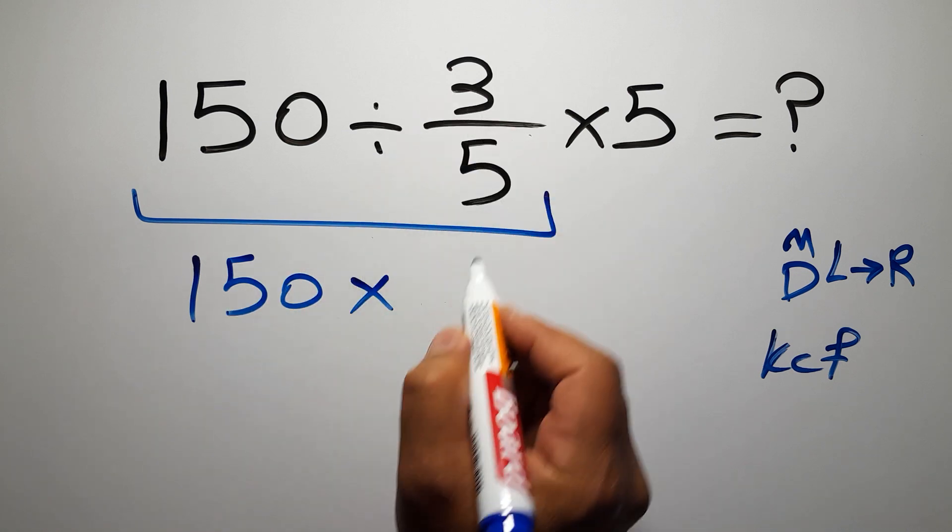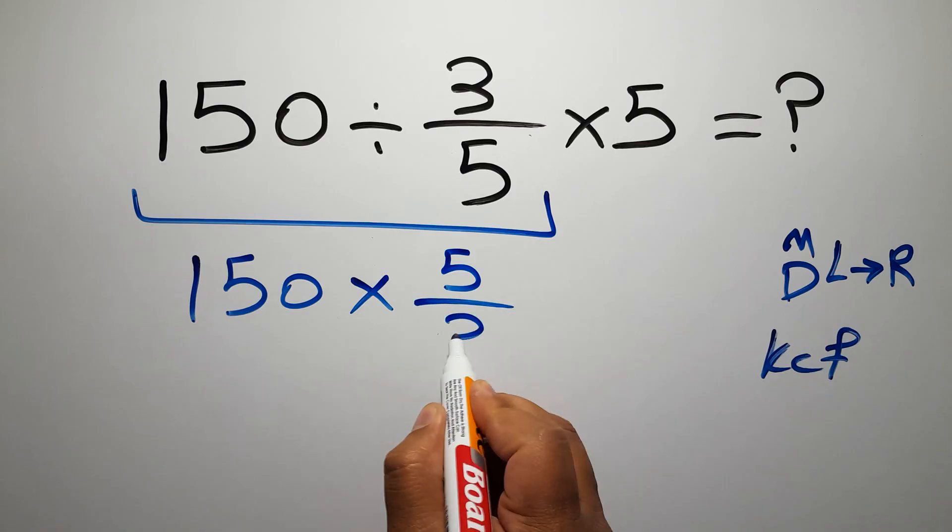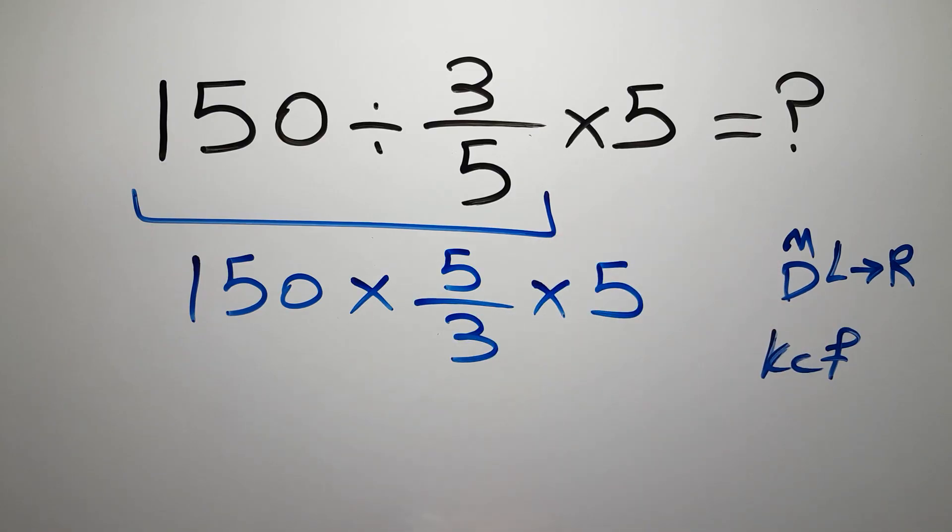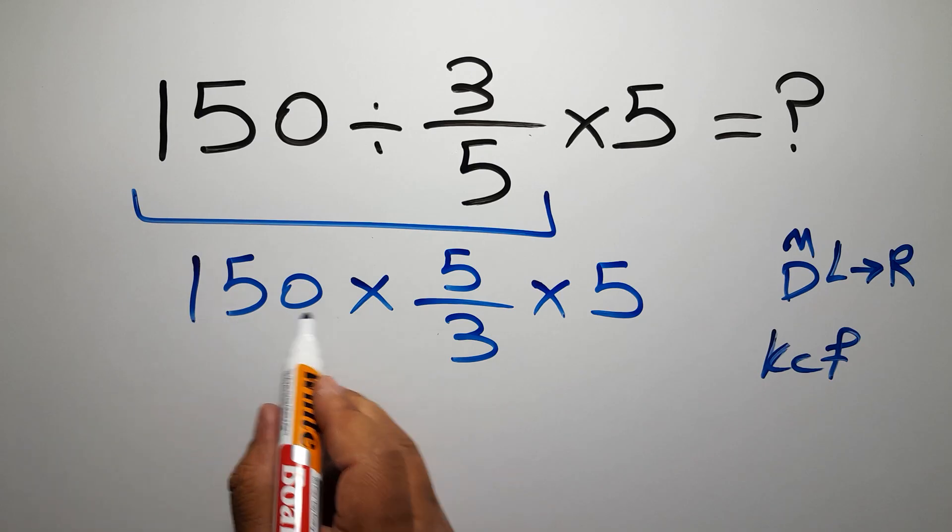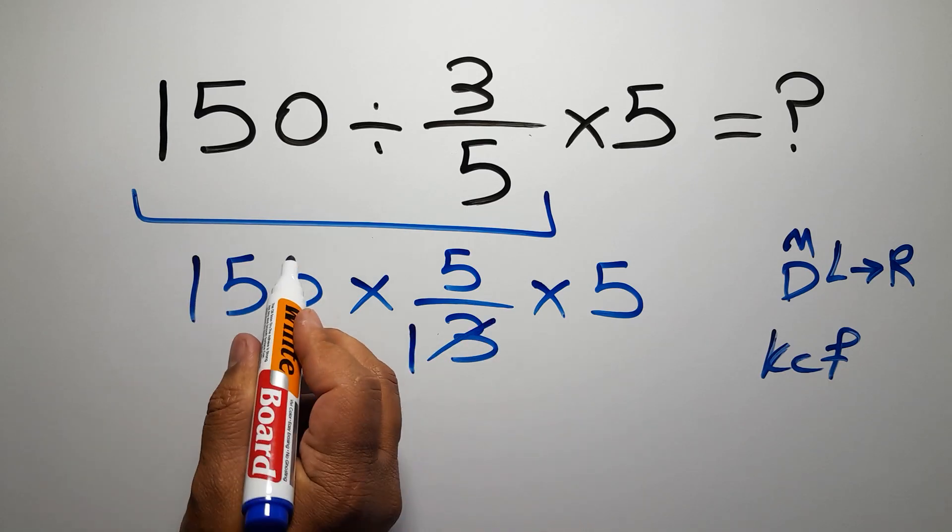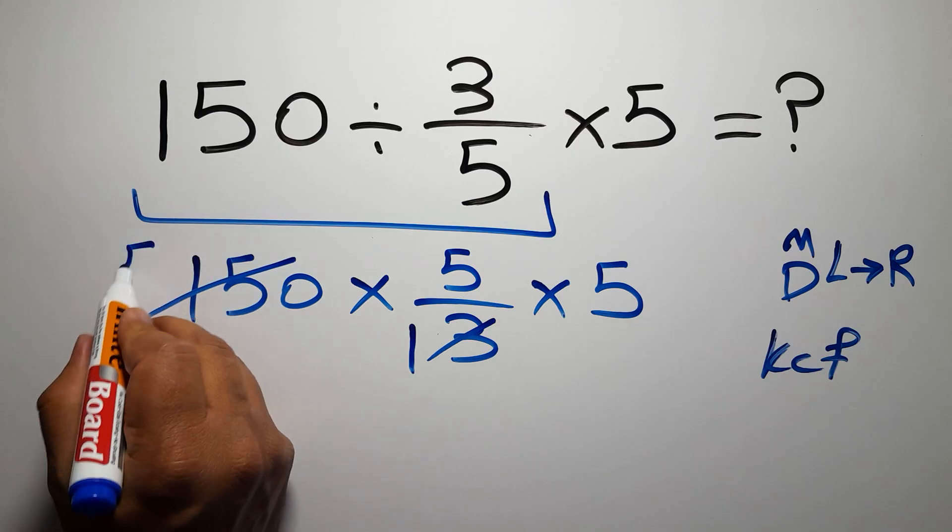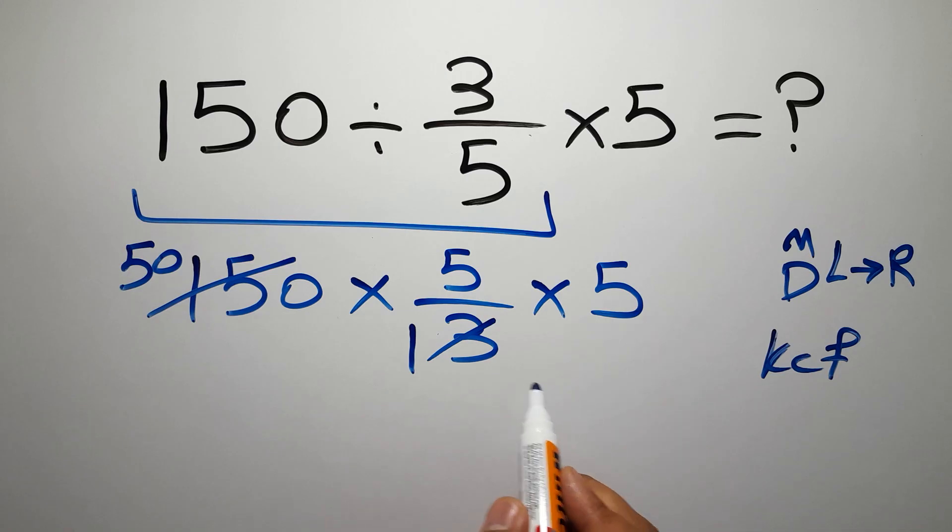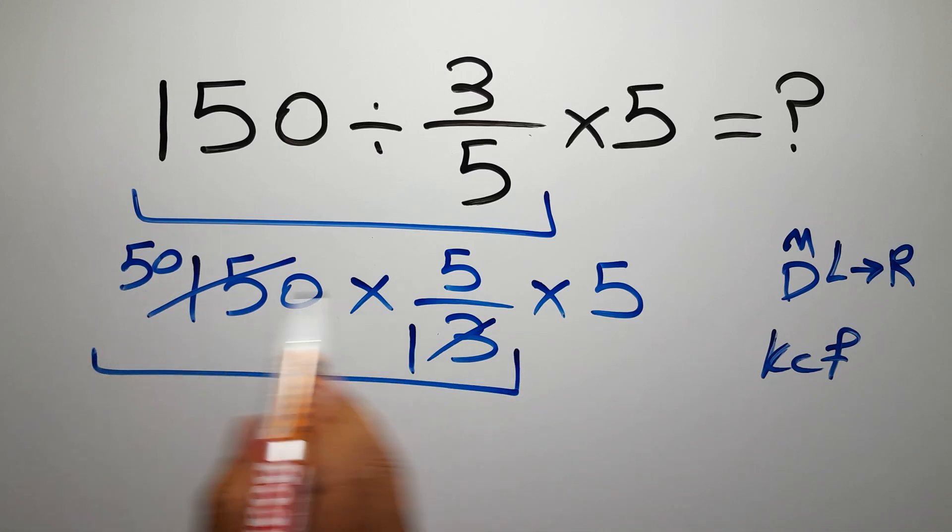Okay, so 150 times 5 over 3 times 5. 3 divided by 3 gives us 1, and 150 divided by 3 gives us 50. So 50 times 5 times 5.